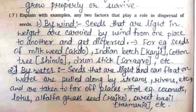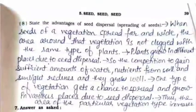First factor: by wind — seeds that are light in weight are carried by wind from one place to another and get dispersed. For example, milkweed (akdo), Indian beech (kanji), cotton tree (shimlo), drumstick (saragwo), etc. Second factor: by water — seeds that are light and can float on water are pulled along by streams, rivers, etc. and taken to far off places. For example, coconuts, lotus, alfalfa grass seed (rajko), sweet basil (takmariya), etc.